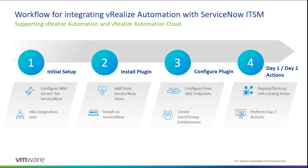In stage three, after doing a few configurations on the ServiceNow side, we configure our VRA endpoints and create user or group entitlements to map the catalog items imported from VRA to native users in ServiceNow. Once that happens, we move to stage four, where VRA or plugin users can perform day one and day two actions — day one being deploying or destroying VRA catalog items, and day two being additional operational actions as shown in the following videos.